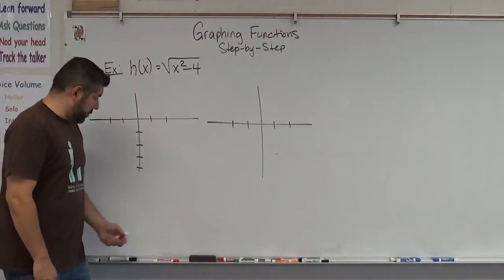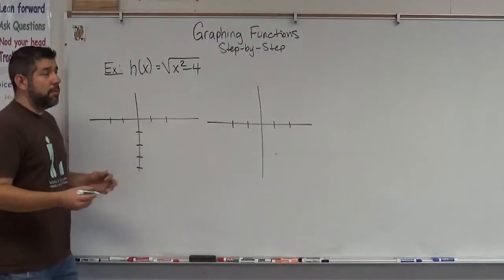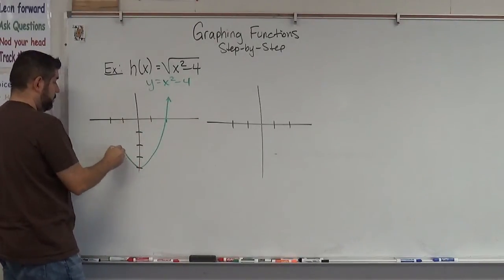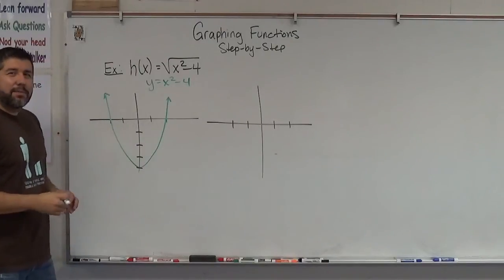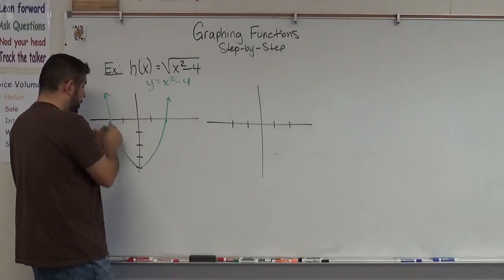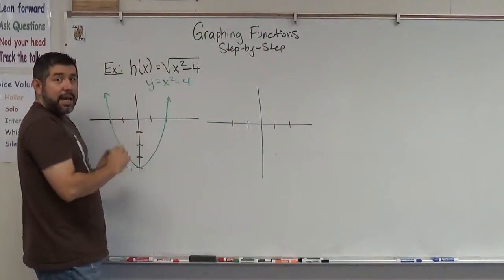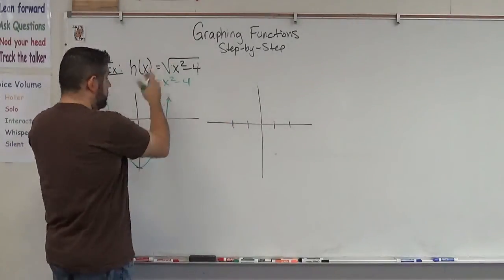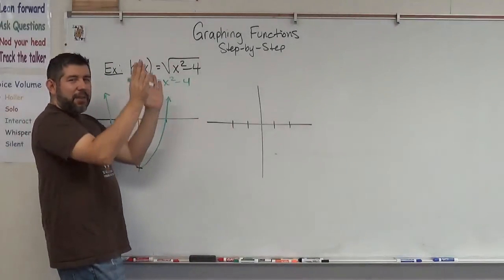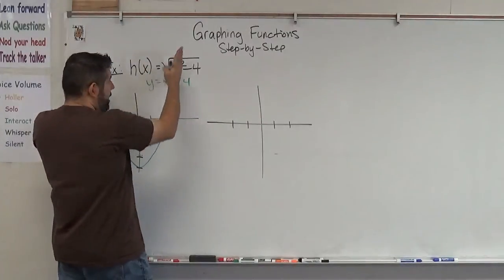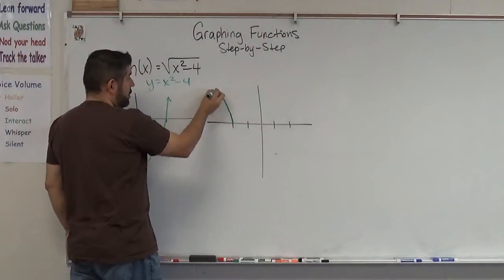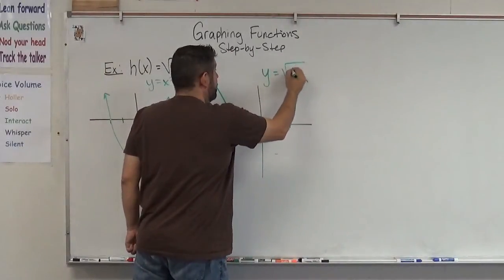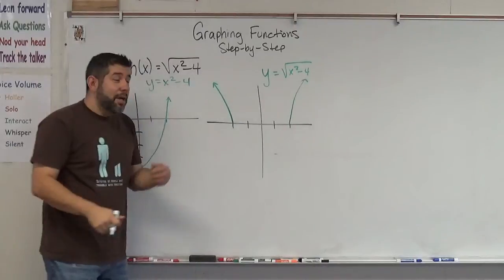I have the square root of x squared minus 4. First I'll graph x squared minus 4 like in the previous problem. Now here's what the square root does: I take this portion below the x-axis and get rid of all of it. Everything above the x-axis I keep. Here, I keep these parts going up, but since I'm taking the square root of a square, they're going to flatten out — they won't increase as quickly. So it kind of looks like this. That's our graph of y equals the square root of x squared minus 4.